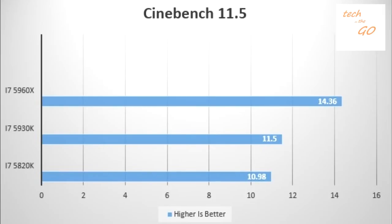Now let's jump straight into benchmarks. In Cinebench 11.5, the i7-5960X scores 14.36, the i7-5930K scores 11.5, and the i7-5820K scores 10.98.